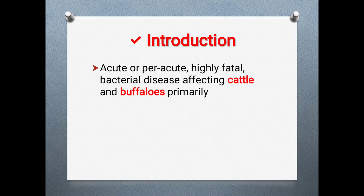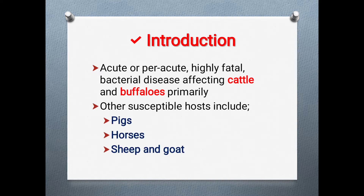In introduction, Hemorrhagic Septicemia is an acute — meaning severe — or per-acute, highly fatal bacterial disease affecting cattle and buffaloes, especially water buffaloes, which are considered the primary hosts. Other susceptible hosts from which the organism has been isolated include pigs, horses, sheep, goats, and donkeys.